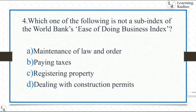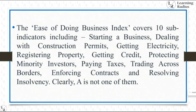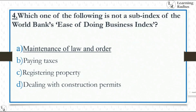Which one of the following is not a sub-index of the World Bank Ease of Doing Business Index? The Ease of Doing Business Index has 10 sub-indices: starting a business, dealing with construction permits, getting electricity, registering property, getting credit, protecting minority investors, paying taxes, trading across borders, enforcing contracts, and resolving insolvency. The option 'maintenance of law and order' is not among them, so that is the correct answer.